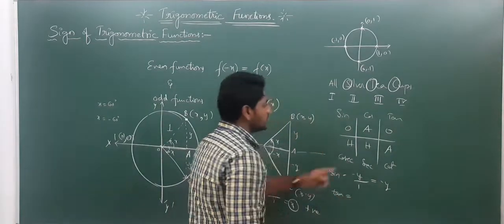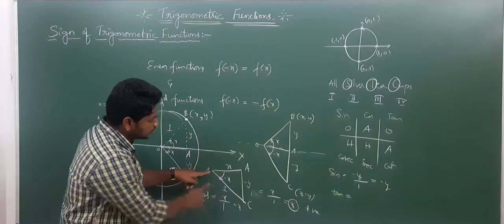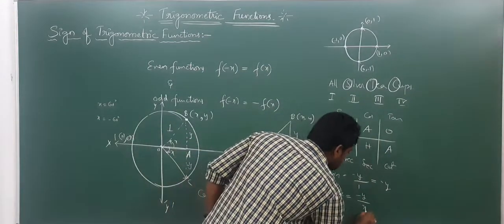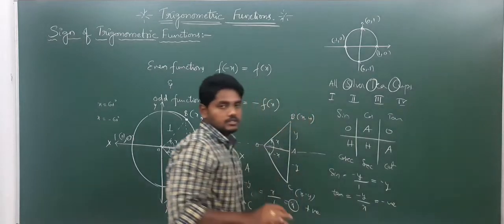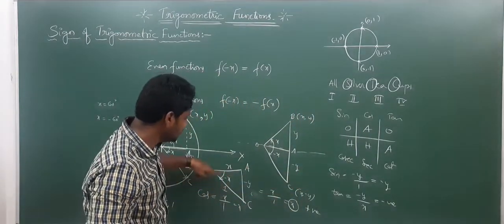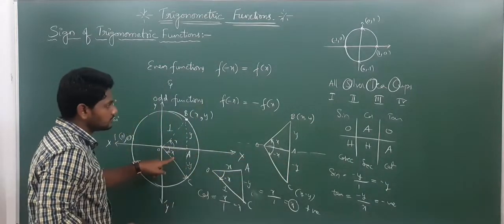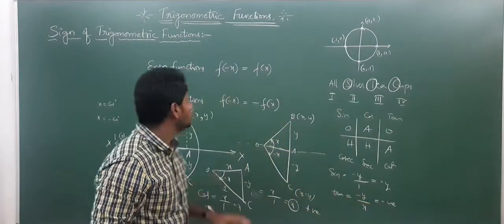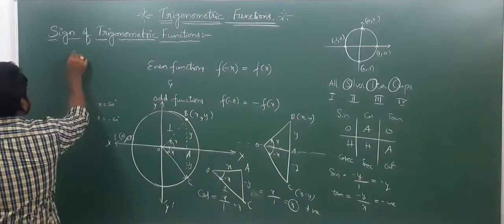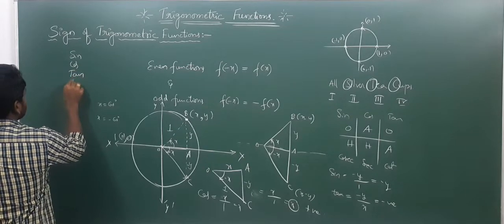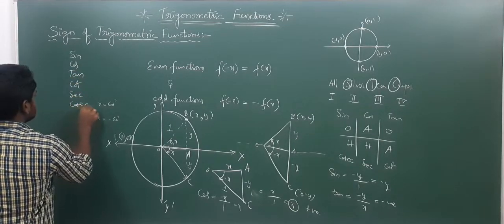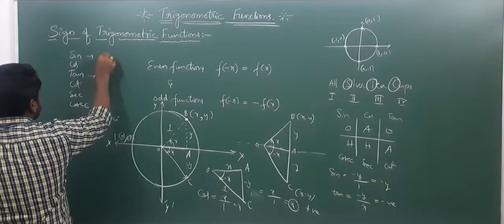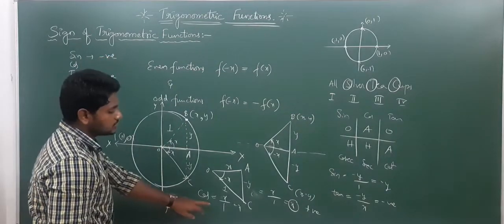For tan: opposite by adjacent. The opposite is minus y and the adjacent is OA which is x. So minus y by x — that is negative. Observing f of minus x for sine and tan gives a negative result, while for cos we get a positive result.